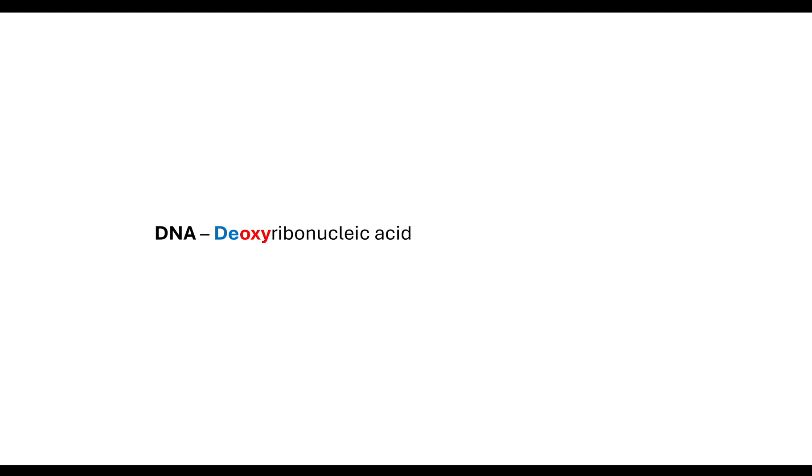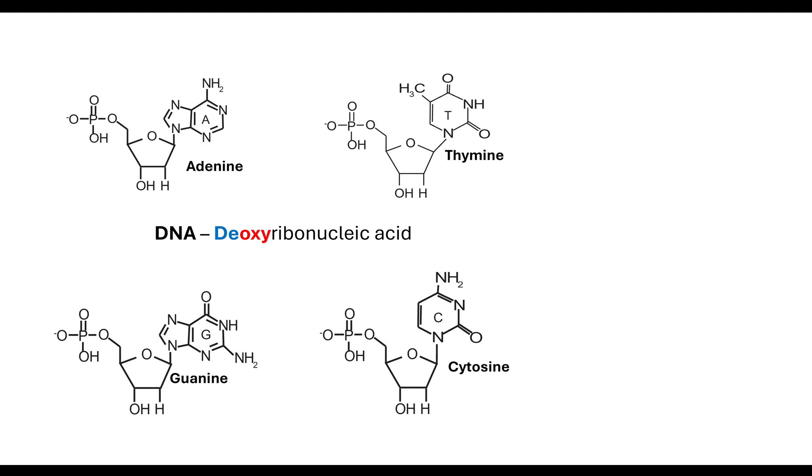The next thing we need to look at is our nitrogenous bases. When we look at deoxyribonucleic acid, we are looking at nucleotides which have a deoxyribose sugar and a potential of four nitrogenous bases: adenine, thymine, guanine, or cytosine. The difference between these nitrogenous bases is whether it has a double ring. If it has a double ring, then that is called a purine.